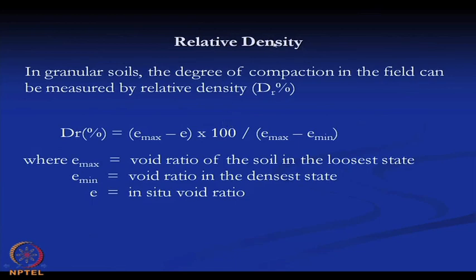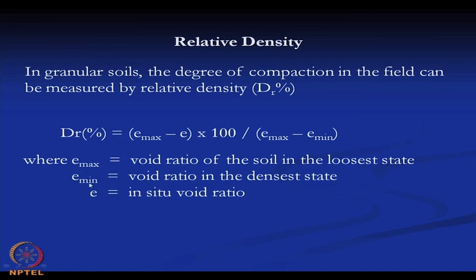The relative density of a granular soil, which measures the degree of compaction in the field, is expressed as: Rd = (e_max − e) / (e_max − e_min) × 100%, where e_max is the void ratio in the loosest state, e_min is the void ratio in the densest state, and e is the in-situ void ratio. If we know these three values, we can determine the relative density at any condition.